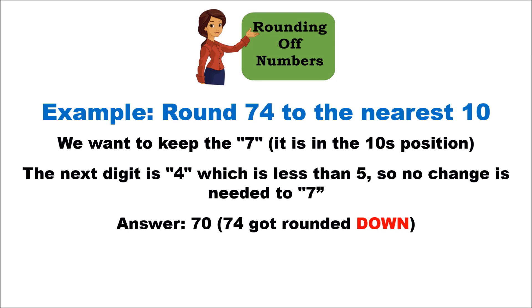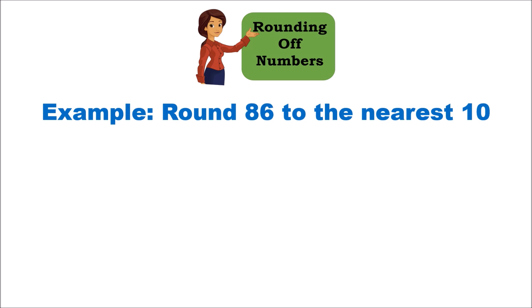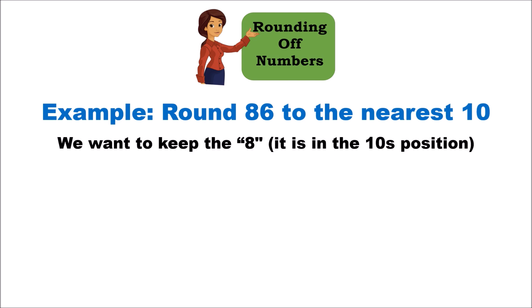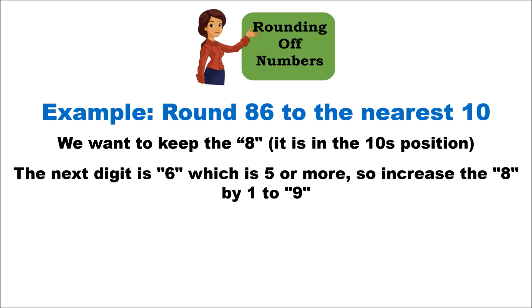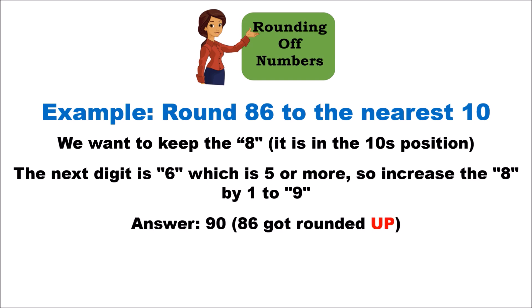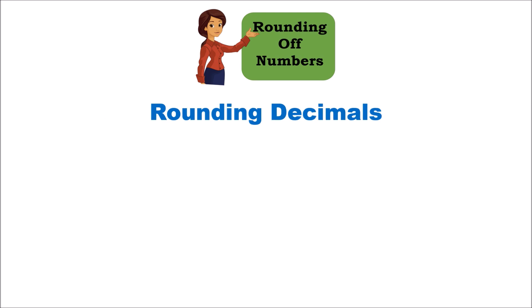Now let's look at another example: we have 86 and we need to round it to the nearest ten. Eight is in the tens position, so we leave eight as it is and look at the next digit to the right, which is six. Six is five or more, so we increment the eight by one and make it nine. Therefore, 86 rounded to the nearest ten becomes 90 — it is rounded up to 90.